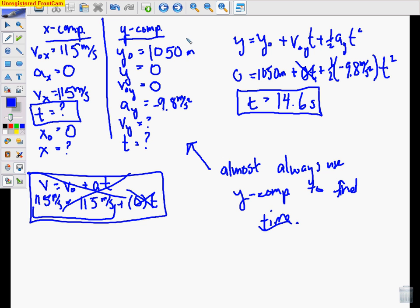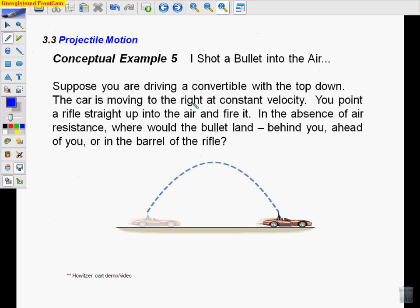A couple more examples. Conceptual example, thinking. Let's say you're driving along in a fast car and you would never actually do this because this would be incredibly dangerous, but you shoot a gun into the air. So the rifle is pointed straight up, vertically, and you fire it.